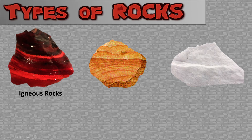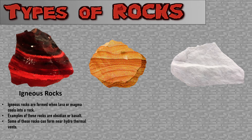Igneous rocks are formed when lava or magma cools down into a rock. Examples of these rocks are obsidian or basalt. Some of these rocks formed near hydrothermal vents or volcanoes.